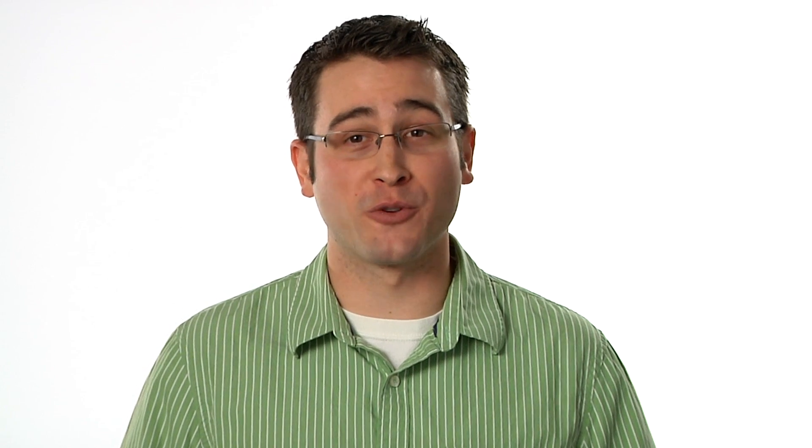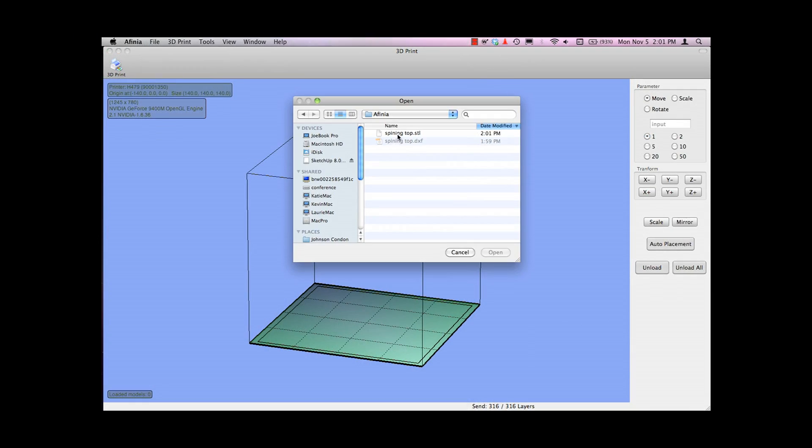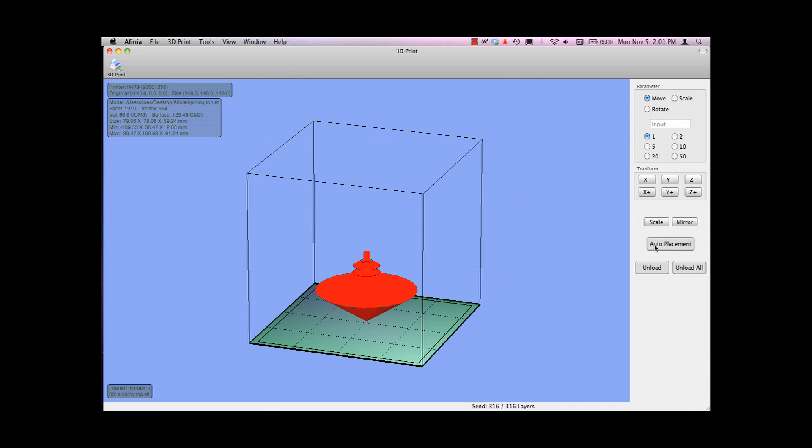So why choose Affinia? That's simple. Our printer is ready to go out of the box so you can get right to work. The print software is custom designed and professional quality, so placement is easy and support structures are strong and come away clean.